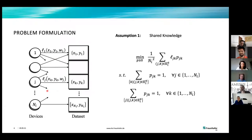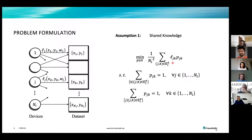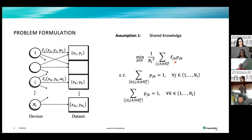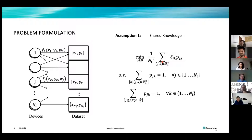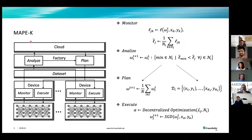The problem is formulated as a multi-assignment problem, where devices on the left-hand side compute a loss function on each part of the data sets, split into a number of subsets equal to the number of devices. The first constraint is that each device must be assigned to at least one subset; the second is that each subset must be assigned to at least one device. The objective is to minimize the loss across all devices and subsets to achieve a better model.